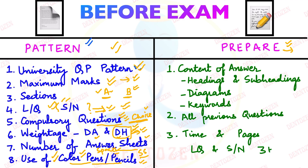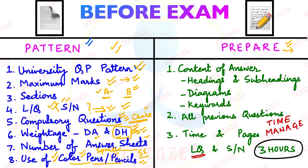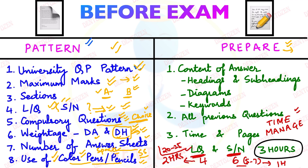The third and most important thing in your preparation is time management — very, very important. Being a first year student, you don't have experience writing university exams, and the most common mistake is to keep writing one answer you know well and lose track of time, leaving no time for short notes. For example, if there are four long questions and six short notes, plan to give only 20 to 25 minutes per long question — two hours total — and five to seven minutes per short note — one hour total — giving three hours overall.